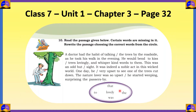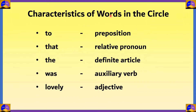The words in the circle are: that, to, lovely, the, and was. Let's look at what group each word belongs to. 'To' is a preposition, 'that' is a relative pronoun, 'the' is a definite article, 'was' is an auxiliary verb, and 'lovely' is an adjective. These word groups are a clue to finding our answers.